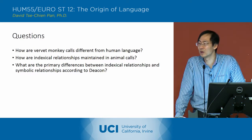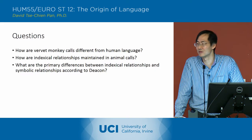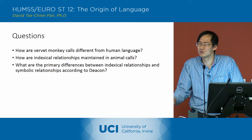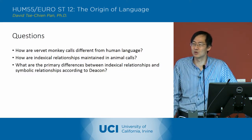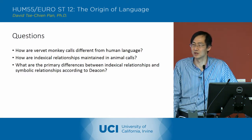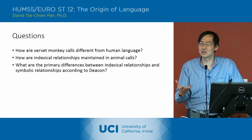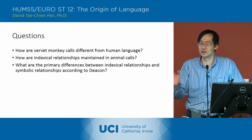So how are vervet monkey calls different from human language? There are a couple of answers to this. With vervet monkey calls, there's a direct correlation between the sign and the object. It's not that there's no correlation between signs and objects in human language, but those correlations between sign and object in human language are subordinate to the sign-sign relationships — relationships between signs.